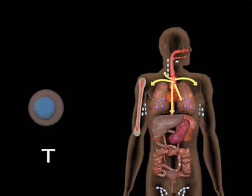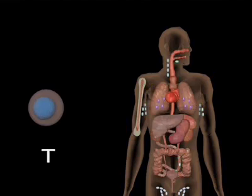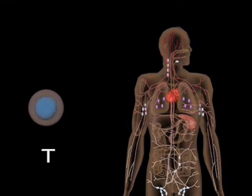From the thymus, they travel through the bloodstream to the various secondary lymphoid tissues, such as the lymph nodes, the Peyer's patches on the gut, or the spleen. They may circulate through the lymphatics back into the bloodstream.